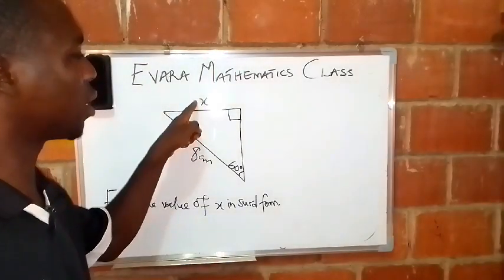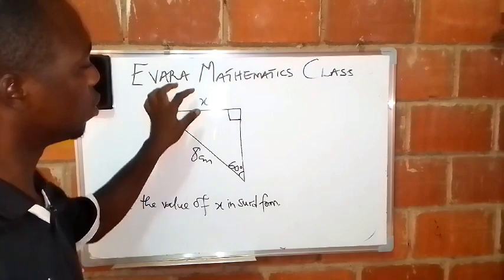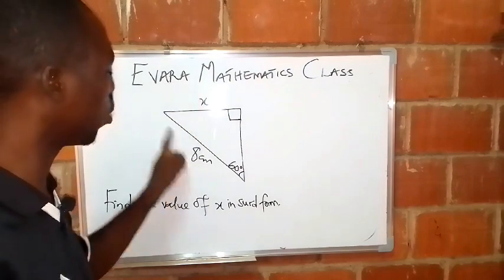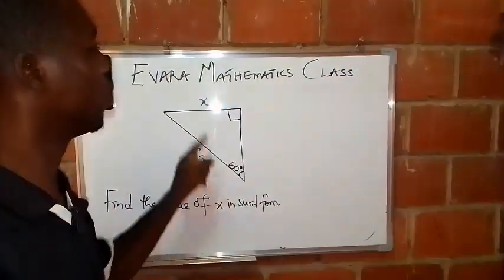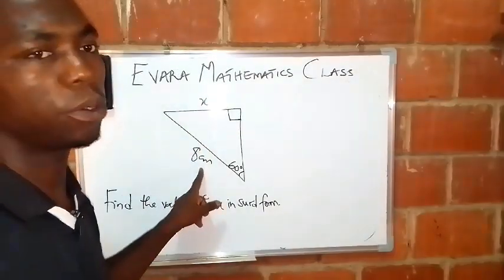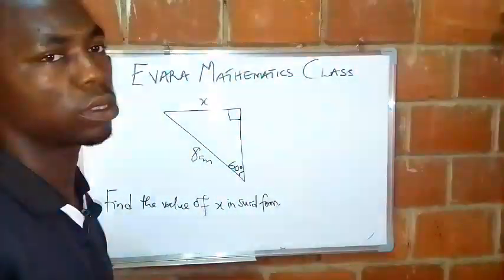So if you look at this side, this is opposite and the longest side hypotenuse. So when you have opposite and hypotenuse, then you make use of sine.